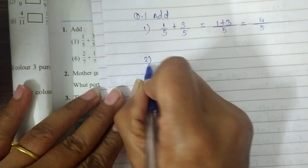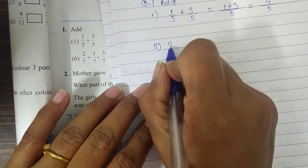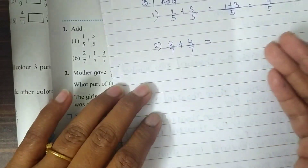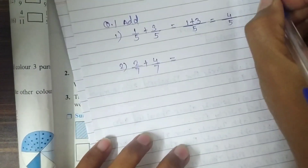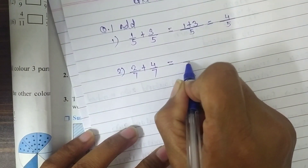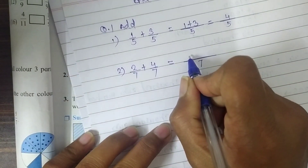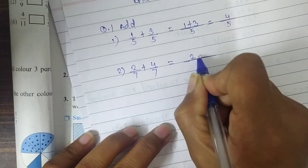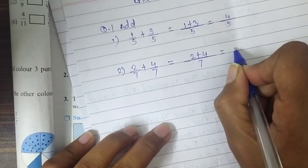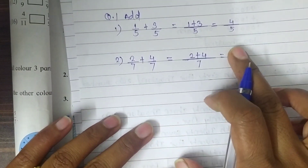The second question is 2 upon 7 plus 4 upon 7. Remember, while adding like fractions we add only numerators — it doesn't need to add denominators. Write the denominator 7 one time for both fractions and on the numerator side write 2 plus 4. 2 plus 4 is 6 and the denominator is 7. The answer is 6 upon 7.